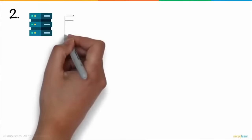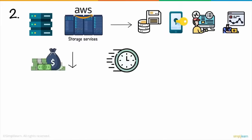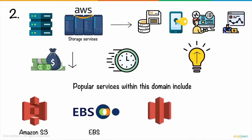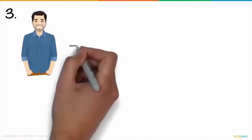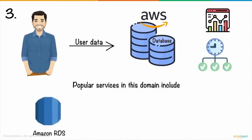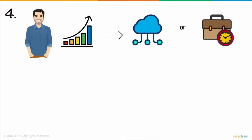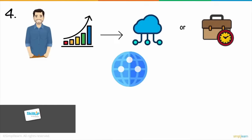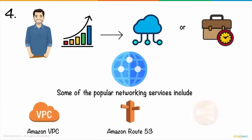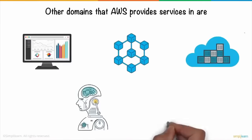Rob can also store user data in a database with AWS services, which he can then optimize and manage. Popular services include Amazon RDS, DynamoDB, and Redshift. For networking, popular services include Amazon VPC, Amazon Route 53, and Elastic Load Balancing. Other domains that AWS provides services in are Analytics, Blockchain, Containers, Machine Learning, Internet of Things, and so on.